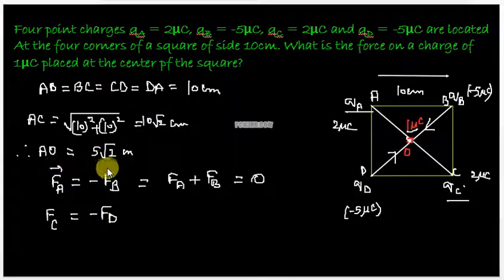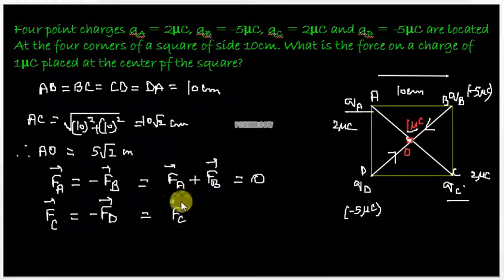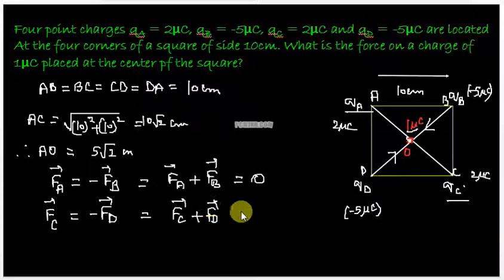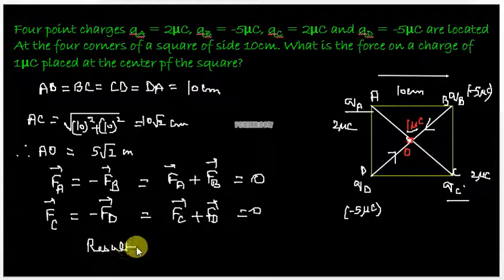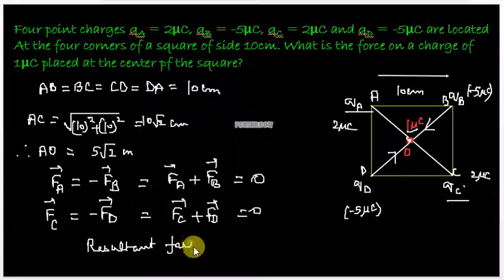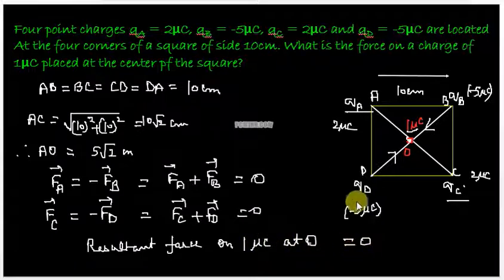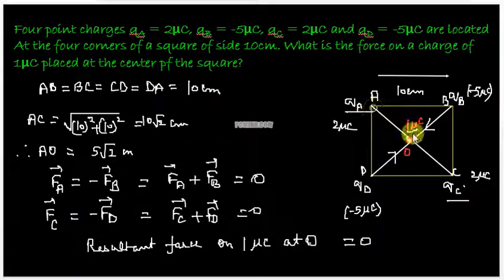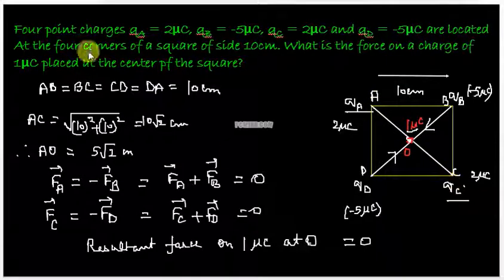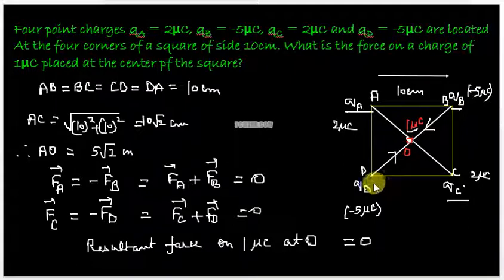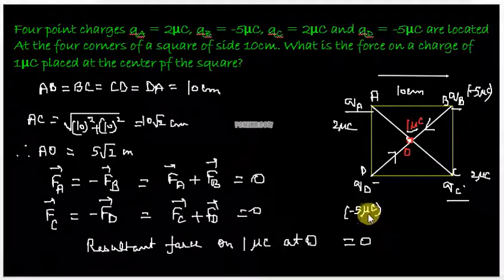Therefore we can put a vector sign here because we're talking about the directions also. So that means FC plus FD would also add up to give you 0, which means the resultant force on the charge, the resultant force on one micro coulomb placed at the center O is equal to 0 because the forces due to the charge at A and C cancel out and the forces on it due to the charge B and D also cancel out. So the resultant force is 0.